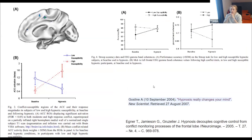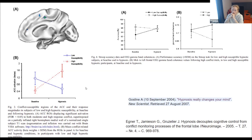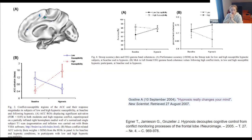Another study had subjects perform a Stroop test under normal conditions and under hypnosis. It was found that more susceptible people showed higher activity in the anterior cingulate gyrus than less susceptible people. As you remember, the anterior cingulate gyrus is connected with comparison, subtraction, and finding rules — so in hypnosis, the critical evaluation processed by this brain region changes.